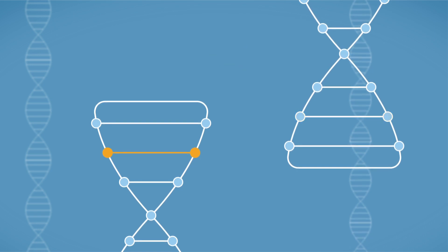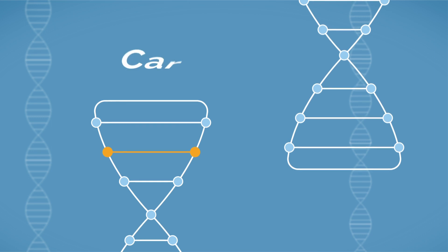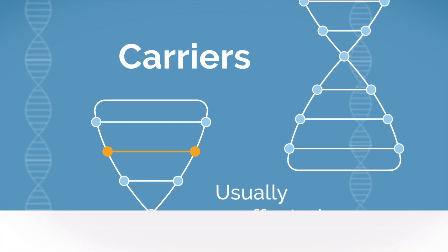If a person has only one non-working copy of an autosomal recessive gene, they are called carriers of the condition. Since they have a working backup copy, carriers are usually unaffected.